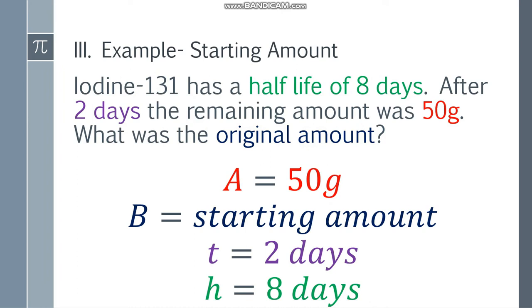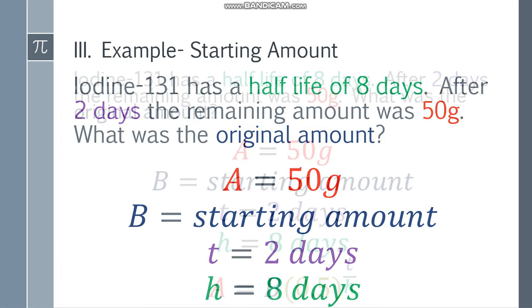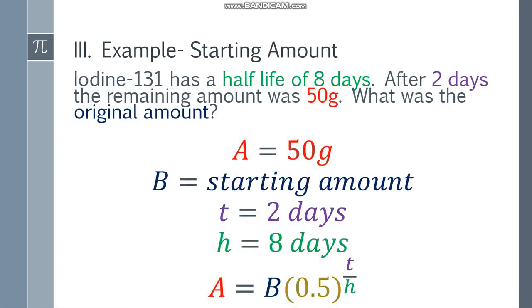So the given: A is equal to 50 grams, B is starting amount or original amount, T will be 2 days, and the half-life is 8 days. So the formula, and also substitute my values. We have 50, so color-coded naman siya. It's equal to B times 0.5 to the 2 over 8.